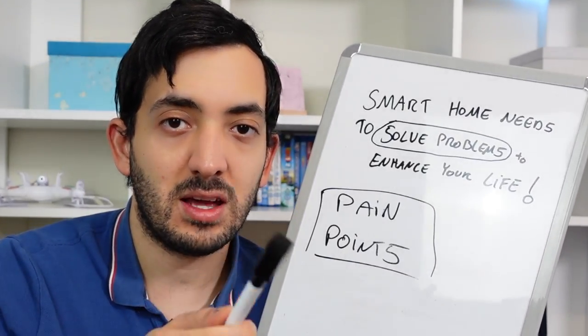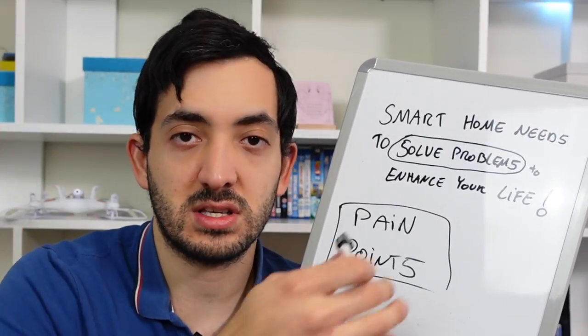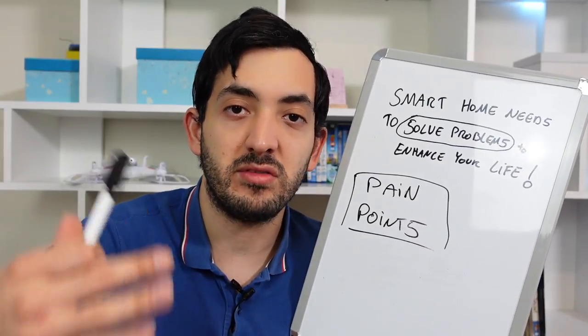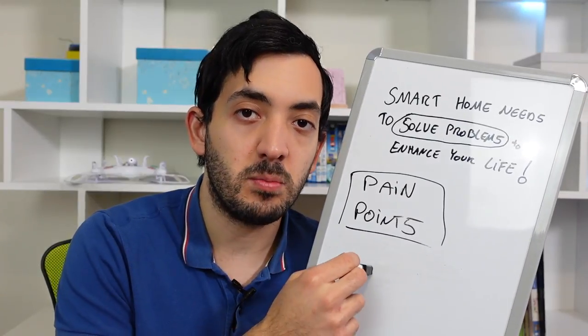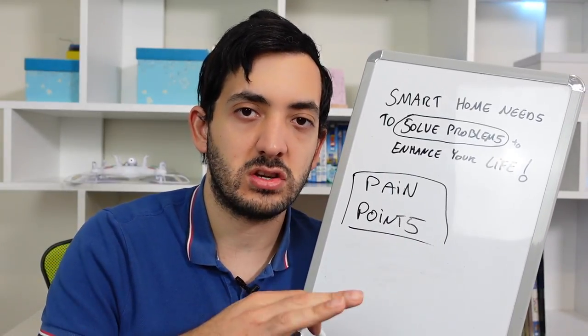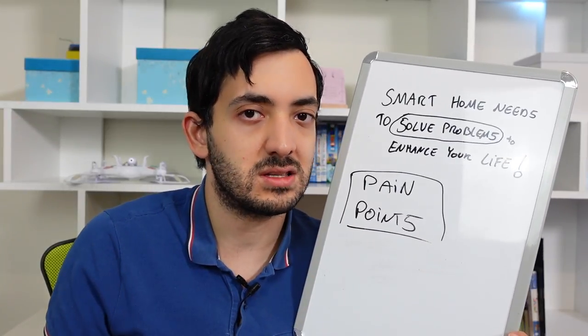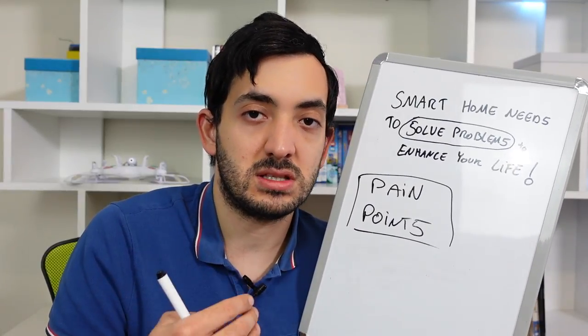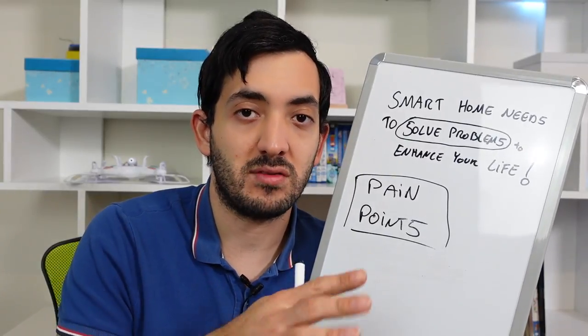Now that I've given that example, you can start thinking about your own pain points. In the next part of the video I'm going to give you a bunch of automation ideas — things I've already done. It's really going to be up to you to think of your own pain points. I hope this makes you see smart homes not as a gimmick, but as a way to enhance your life and have a safer home — reducing domestic incidents, especially with little kids around. Remember to stick till the end for a really cool surprise.